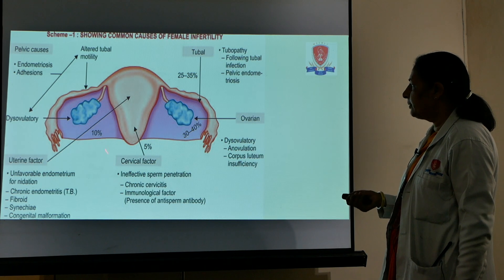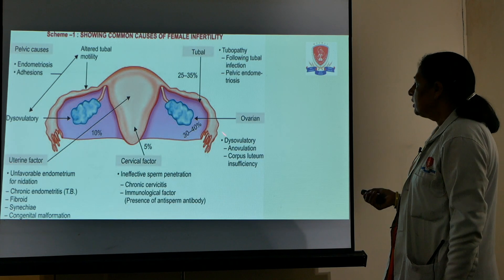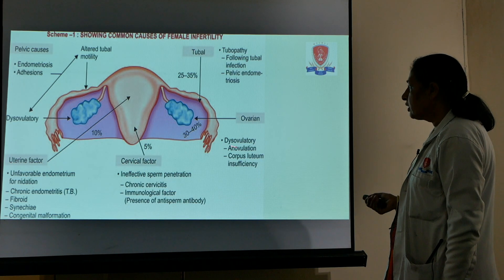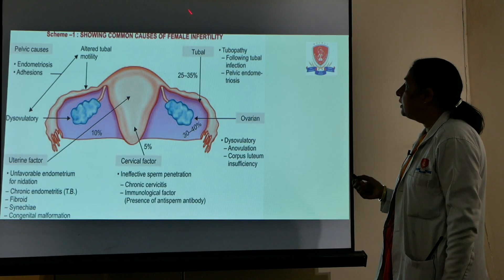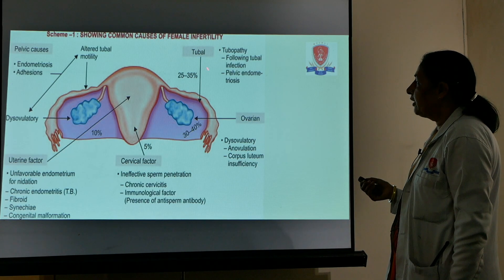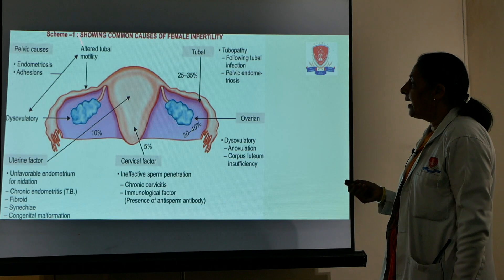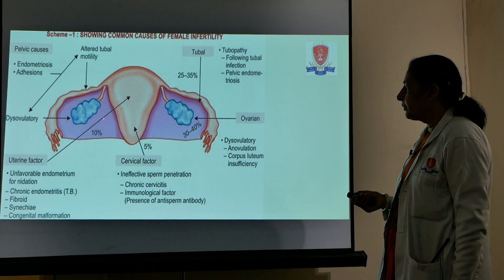This picture shows the common causes of female infertility. Almost 10% are because of uterine factors, 5% because of cervical factors, 30 to 40 percent are ovarian factors, tubal factor is 25 to 35 percent, and other pelvic causes are also present.